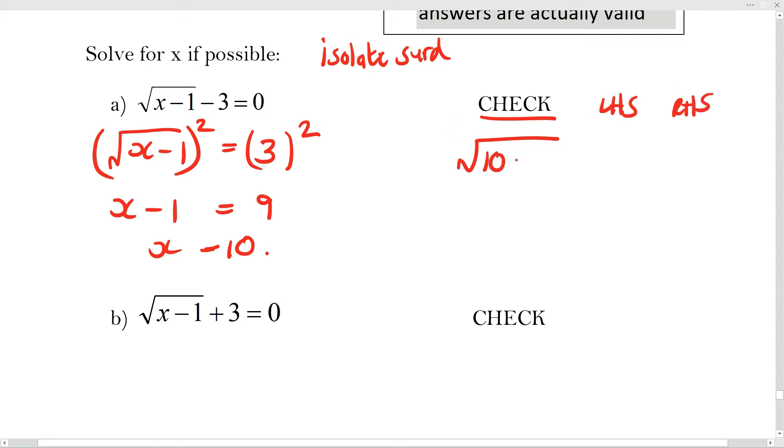So if I now take my 10 minus 1, does that actually work out? Because this is now actually 9. Right. So that is 3 minus 3 equals 0. Yes. So this is an answer that works.